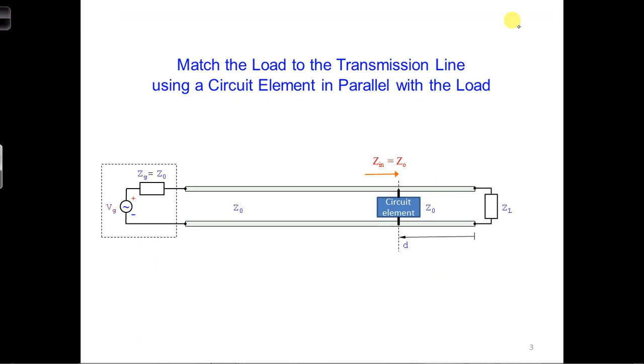Here is a diagram of what this would look like. If a circuit element is parallel to the load, it means it extends between the two conductors of the transmission line at some distance from the end of the transmission line.